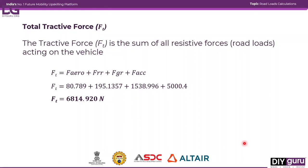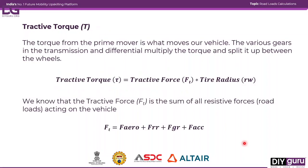We got 6814 Newtons at 50 km/h. The next part is the tractive torque — the torque that moves the vehicle. The various gears and transmission help our prime mover or engine by multiplying torque, so the motor doesn't have to generate so much torque on its own. The formula for tractive torque is tractive force multiplied by the tire radius.